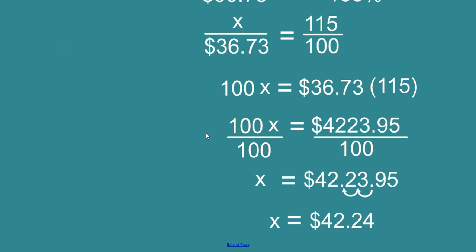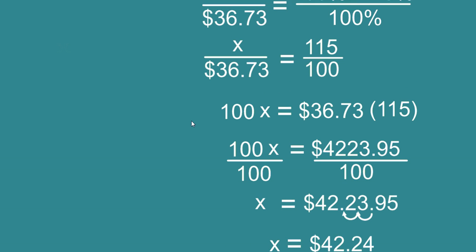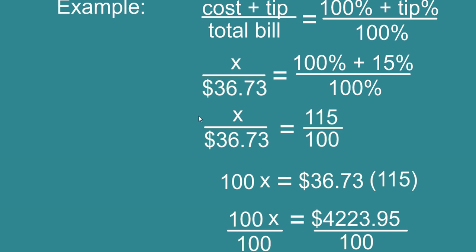But that is a long drawn out process and I'm going to show you a much faster way to solve this same type of problem. It's called the 10% rule and all you have to do to find 10% of a number is move the decimal one place to the left.